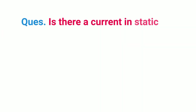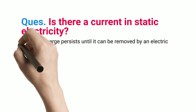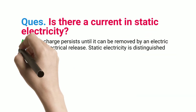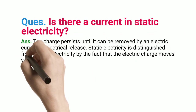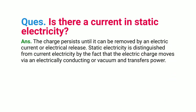Q: Is there a current in static electricity? ANS: The charge persists until it can be removed by an electric current or electrical release. Static electricity is distinguished from current electricity by the fact that the electric charge moves via an electrically conducting medium or vacuum and transfers power.